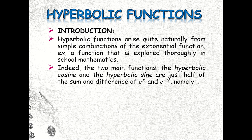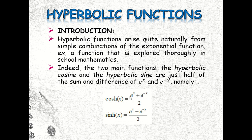The two main functions — the hyperbolic cosine and the hyperbolic sine — are just half of the sum and difference of e to the x and e to the minus x. Namely, cosh(x) equals (e^x + e^(-x)) / 2, and sinh(x) equals (e^x - e^(-x)) / 2.